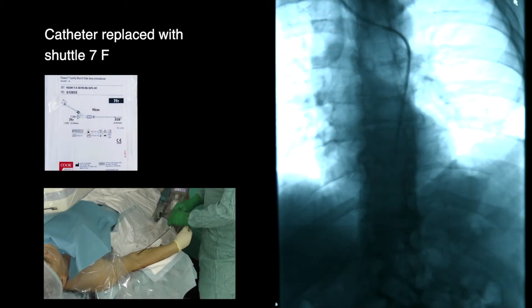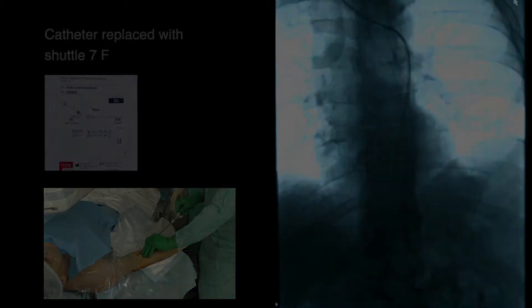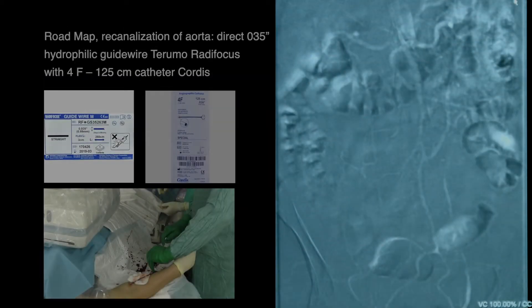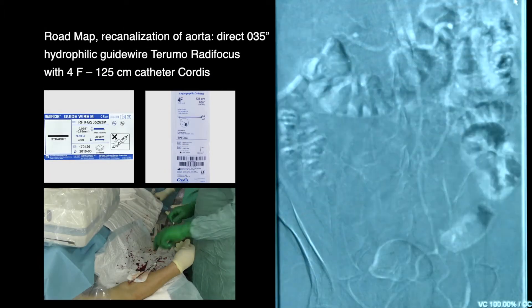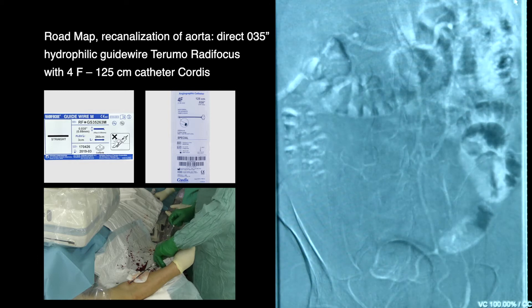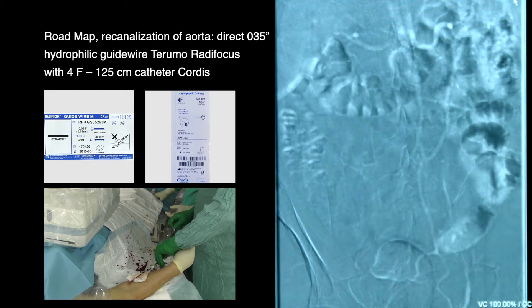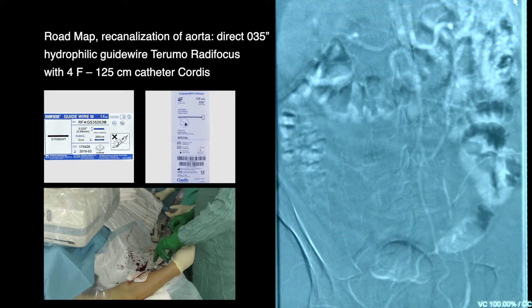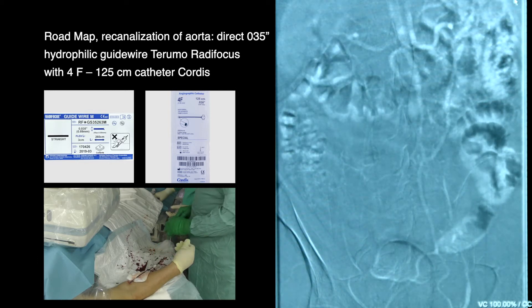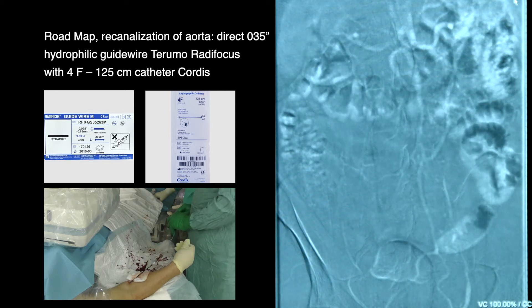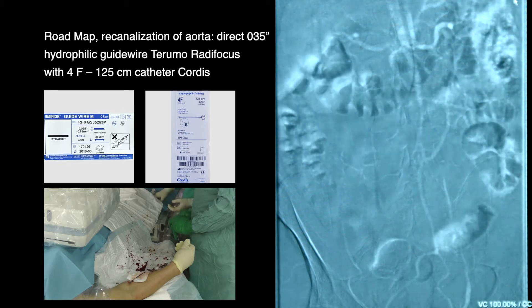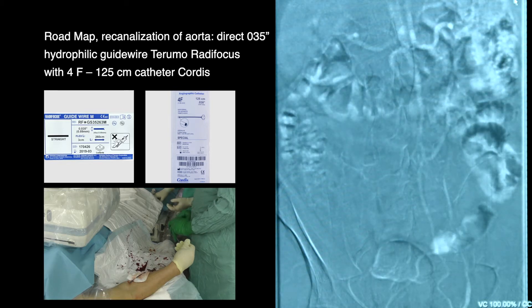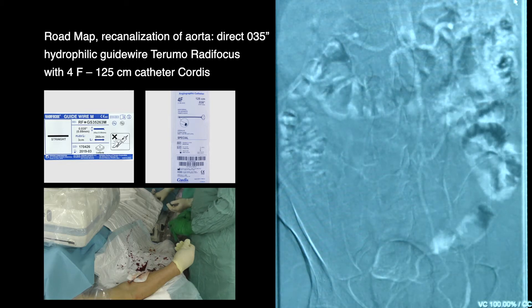Road map obtained. Re-canalization of the aorta performed using a 0.35-inch hydrophilic guide wire via Terumo Radiofocus with a 4 French by 125 cm catheter.